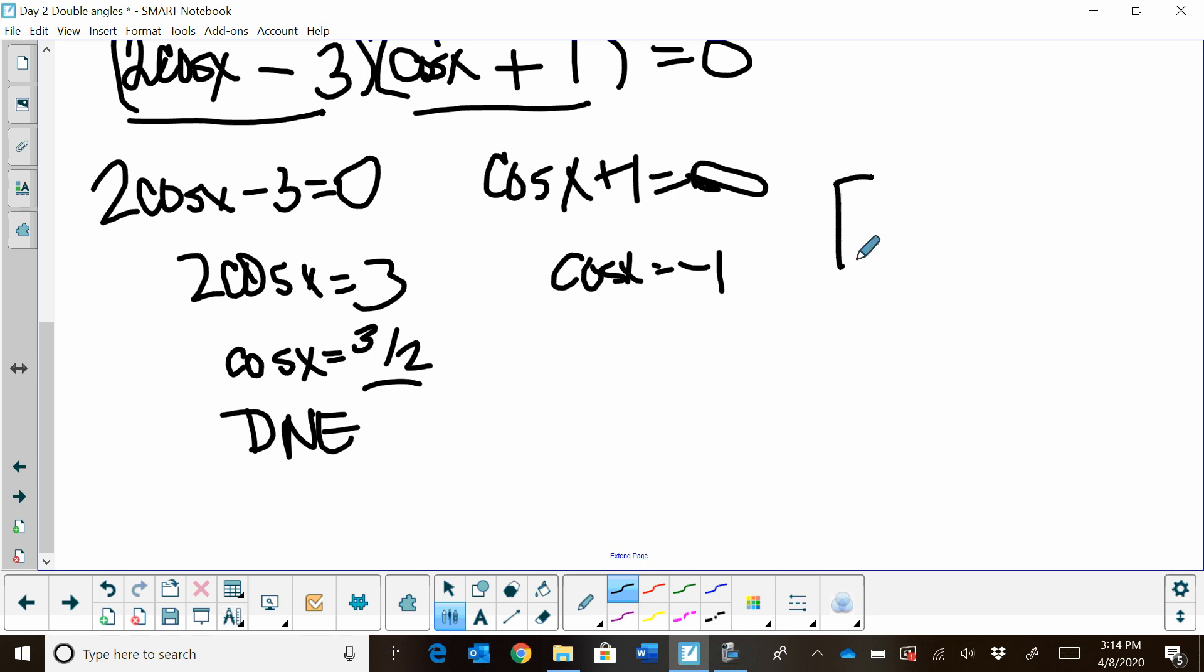And then cosine x equals negative 1. Well, if we're looking on the interval 0 to 2 pi, where does cosine equal negative 1? And I hope you're familiar with the unit circle and you know that has to be at pi. So this equation has just one solution.